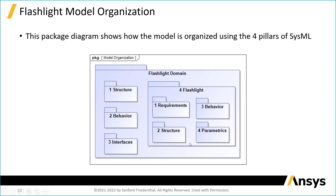Within the flashlight package, you see a requirements package, behavior, structure, and parametrics. This is a typical way in which we organize the model along what we call the four pillars. All those requirements shown previously for the flashlight spec will go in this package. The flashlight behavior — the activity diagrams and state — will go in this package. The component blocks and the flashlight block itself will go in this structure package.